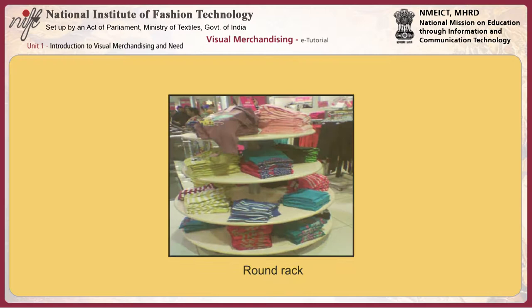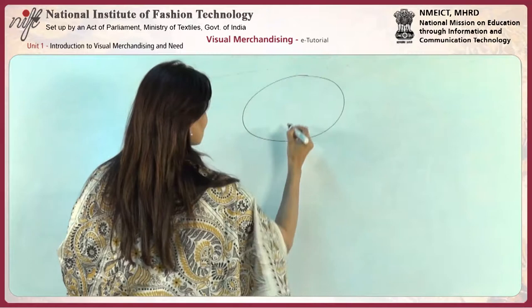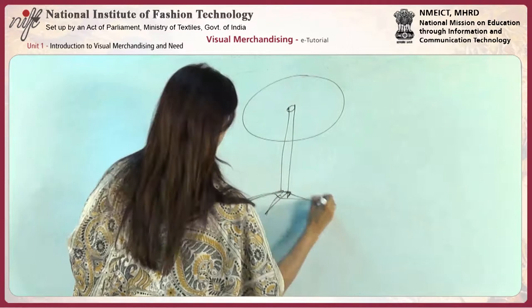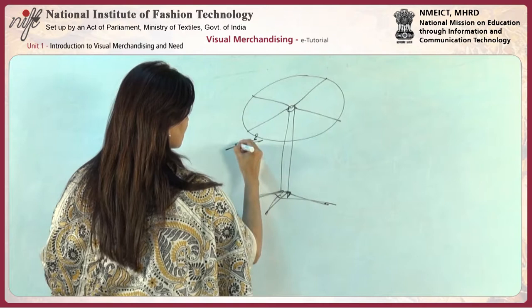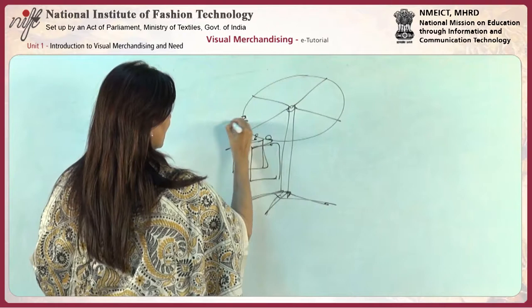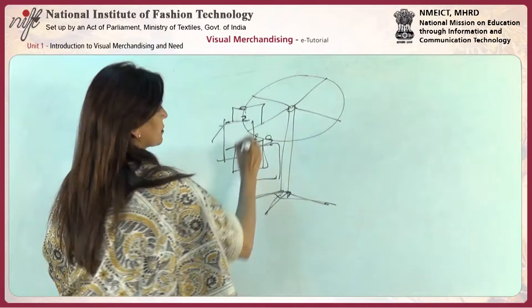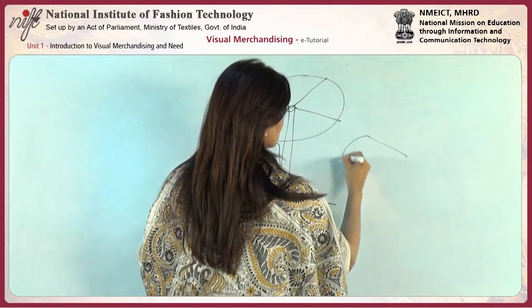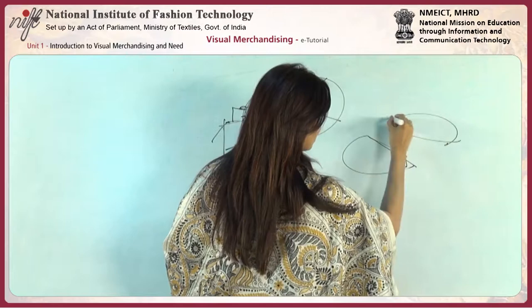A round rack is circular with a base like a tripod, and hangers are placed on it on which garments are arranged in an anti-clockwise direction. Sometimes the round fixture comes in three levels.